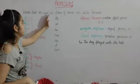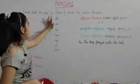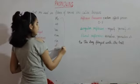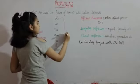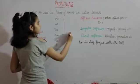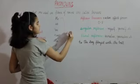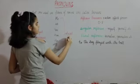Next, dekhte hain object pronouns. Yeh sab jo hain, in ko hum kehte hain object pronouns.